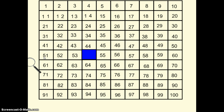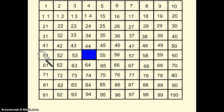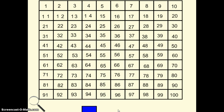I could also use what I learned about patterns in rows to figure out this missing number. In my rows, I know that the ones place always increases by one — one, two, three. And I know that the tens place needs to stay the same — five, five, five. The number under the box is the number 54. If you guessed 54, good job.